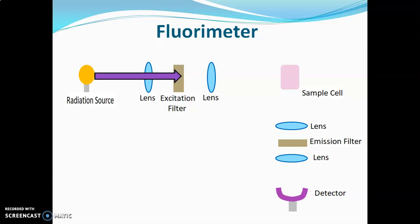The radiation source gives a mixture of UV and visible radiations. The excitation filter absorbs visible radiations and only UV radiations are allowed to pass towards the sample. In the sample, few radiations are absorbed and few radiations are transmitted.